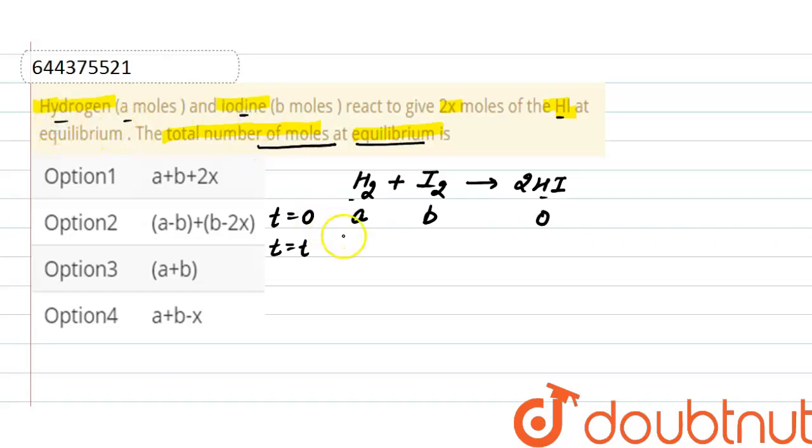At equilibrium, the moles of hydrogen are a minus x, and x is the reacted amount of H2 that will convert into HI. The reacted amount of I2 is also x, and the moles of I2 here will be b minus x. The moles of HI at equilibrium is given as 2x.